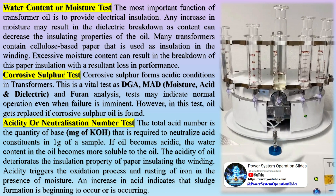Water content or moisture test: the most important function of transformer oil is to provide electrical insulation. Any increase in moisture may result in dielectric breakdown, as moisture can decrease the insulating properties of the oil. Many transformers contain cellulose-based paper used as insulation in the winding, and excessive moisture content can result in the breakdown of this paper insulation with a resultant loss in performance.